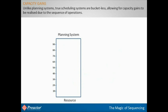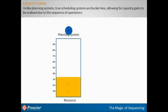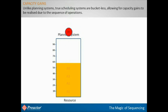Let us show again why this has been obtained. In a planning system, operations are loaded into a bucket of time for each resource. As each batch is added, it takes a portion of the capacity, and we have to take into account the setup time between each batch. Here we have added the orders up to the maximum capacity of the resource for this period, or a bucket of time.